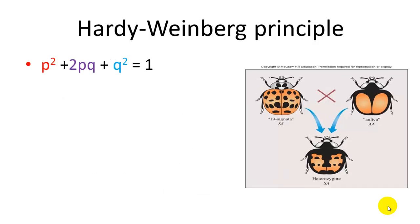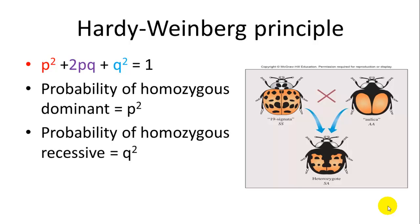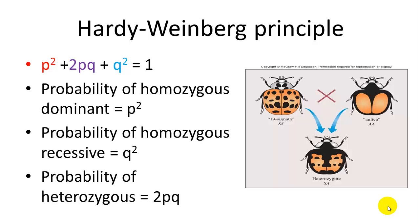The second equation is P squared plus 2PQ plus Q squared equals one. P squared is the probability of homozygous dominant, Q squared is the probability of homozygous recessive, and 2PQ is the probability of heterozygous — so this equation is looking at phenotype frequencies. You can use these equations together; for example, if you have the probability of a homozygous recessive, you can determine the probabilities of the others, assuming no evolution is taking place.